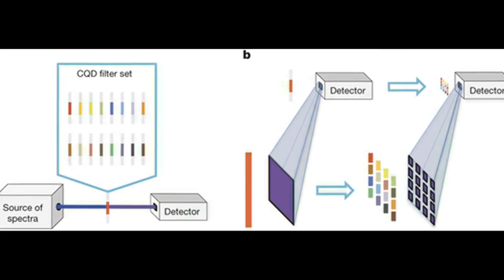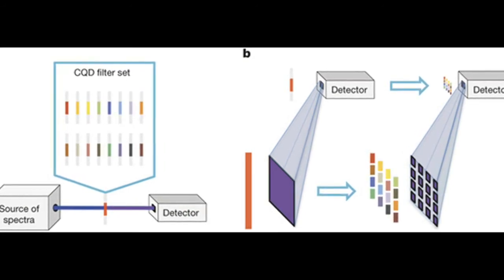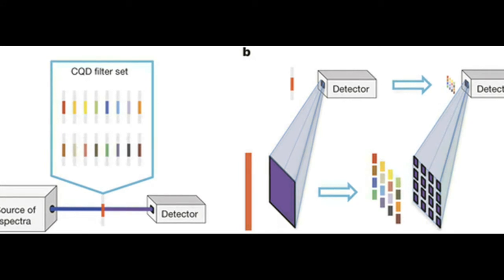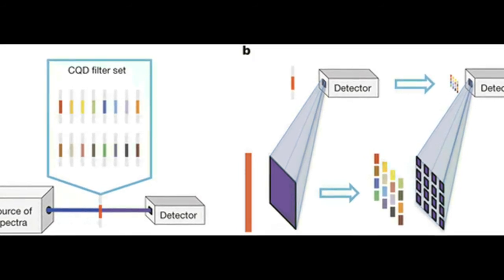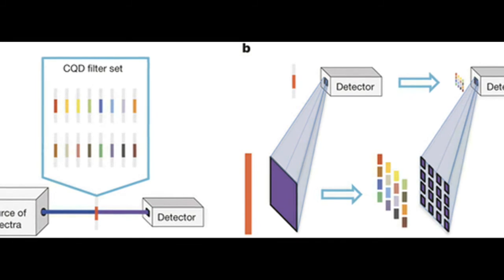The quantum dot filters are printed into a thin film and placed on top of a photodetector, such as the charge-coupled devices found in cell phone cameras.